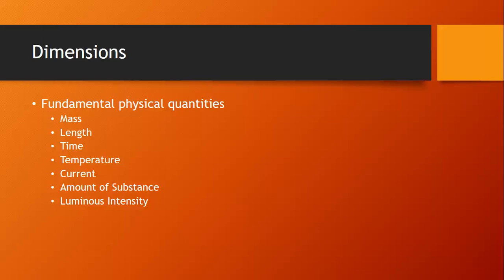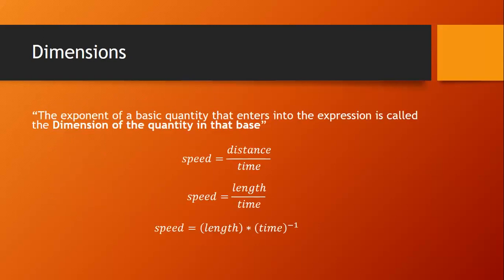When a quantity is expressed in terms of these basic physical quantities and it is written as a product of different powers of the basic quantities, the exponent of a basic quantity that enters into the expression is called the dimension of the quantity in that base. Let me give an example. Let us take a physical quantity: speed.